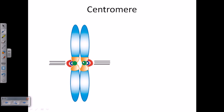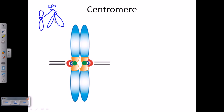This is the centromere. Previously we always draw chromosomes like that — the centromere is that tiny simple joint. But actually centromere is far more complicated; it is a large structure with different regions having different functionalities. We're going to see the different regions of eukaryotic centromere, their functionality, and then the different localizations of centromere and the different naming of chromosomes based on that localization.